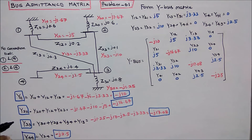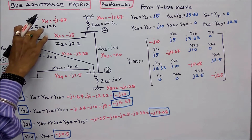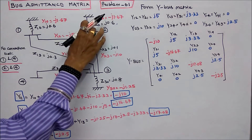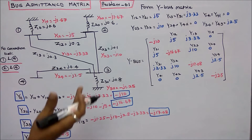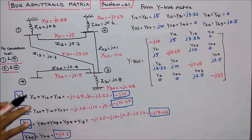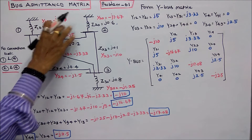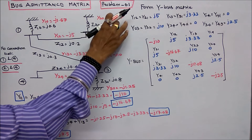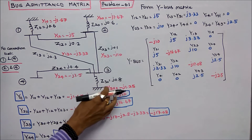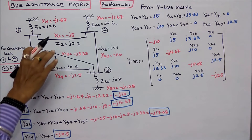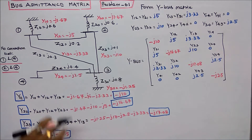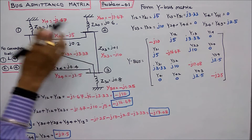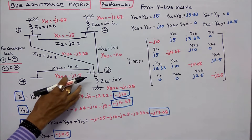The shunt reactance values are: Z10 = j0.6, Z20 = j0.6, Z30 = j0.1. First step, we convert all into admittance using Y = 1/Z. Therefore: Y10 = j1.67, Y20 = j1.67, Y30 = j1.25, Y12 = j5, Y23 = j10, Y13 = j3.33, Y34 = j2.5.